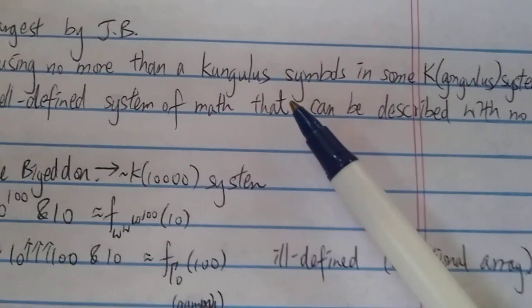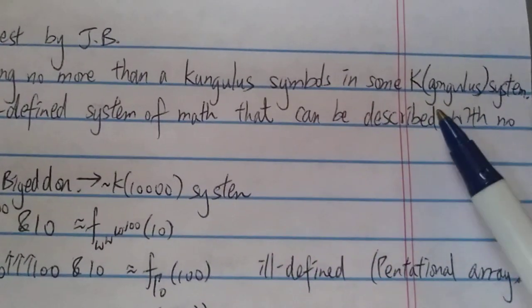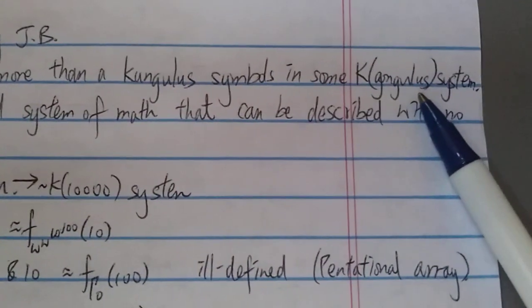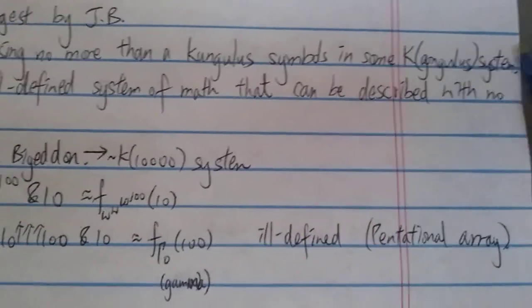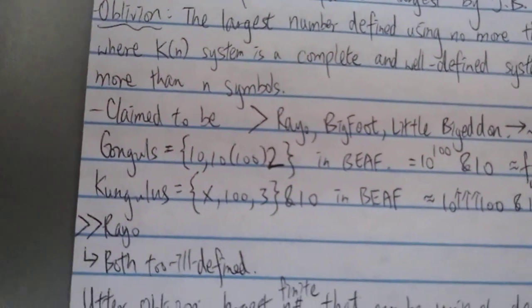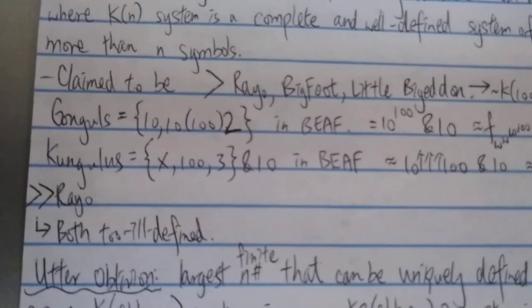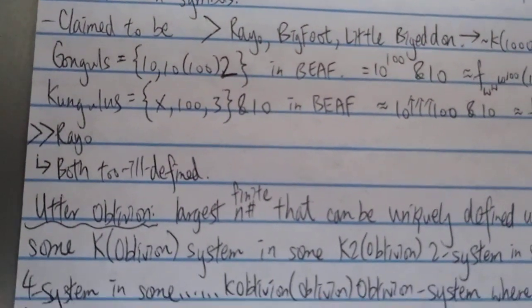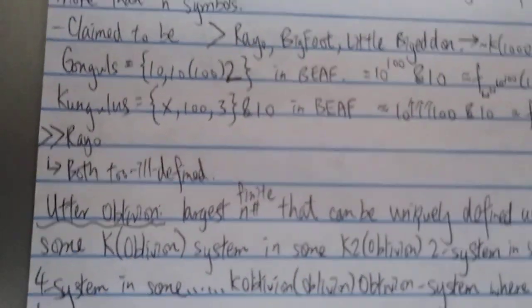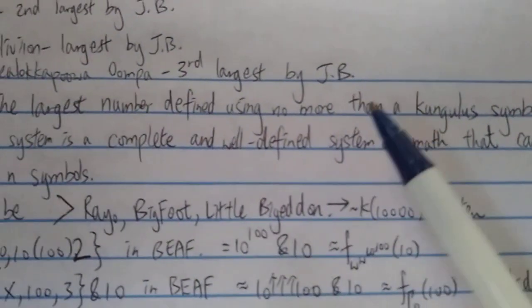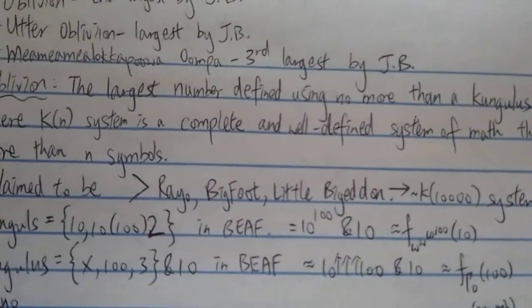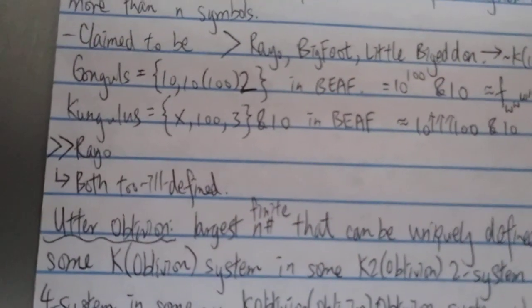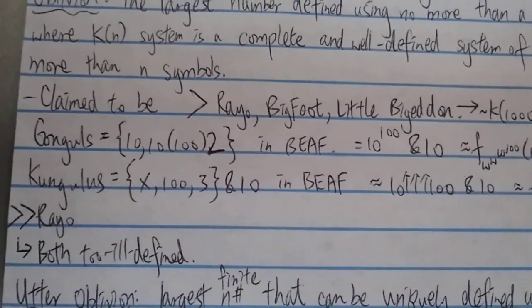He doesn't explain what is a K-gongulous system. Everything is just assumption, assumption by other people. And he doesn't explain what's the language is used in this system, what exactly that is. I mean even Rayo's number some people call it cheating, but still Agustin Rayo explained it kind of in a separate paper so you can read that yourself. But this one is only described with two sentences, so clearly it's too ill-defined to be considered a serious number.